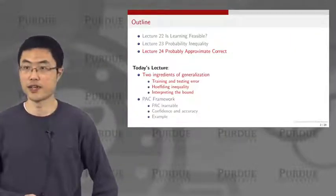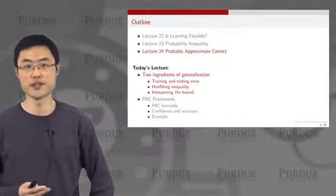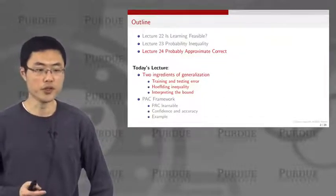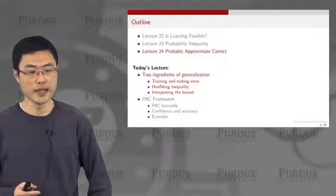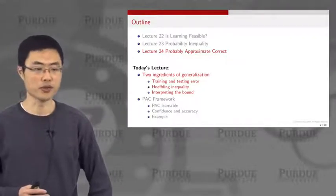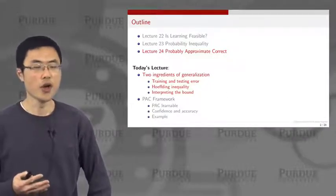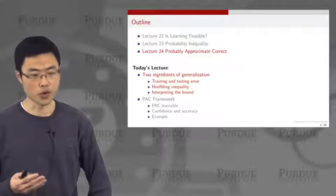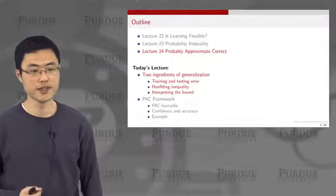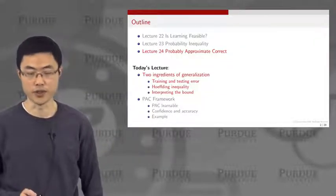We have two parts of the lecture today. The first part will be spent talking about two ingredients of generalization, where we will talk about training and testing error. We will review the Hoeffding inequality and then interpret the bound. In the second part of the lecture, we will talk about the PAC framework, understanding what kinds of problems are learnable and what are not. We will discuss confidence and accuracy, then go over one interesting example.